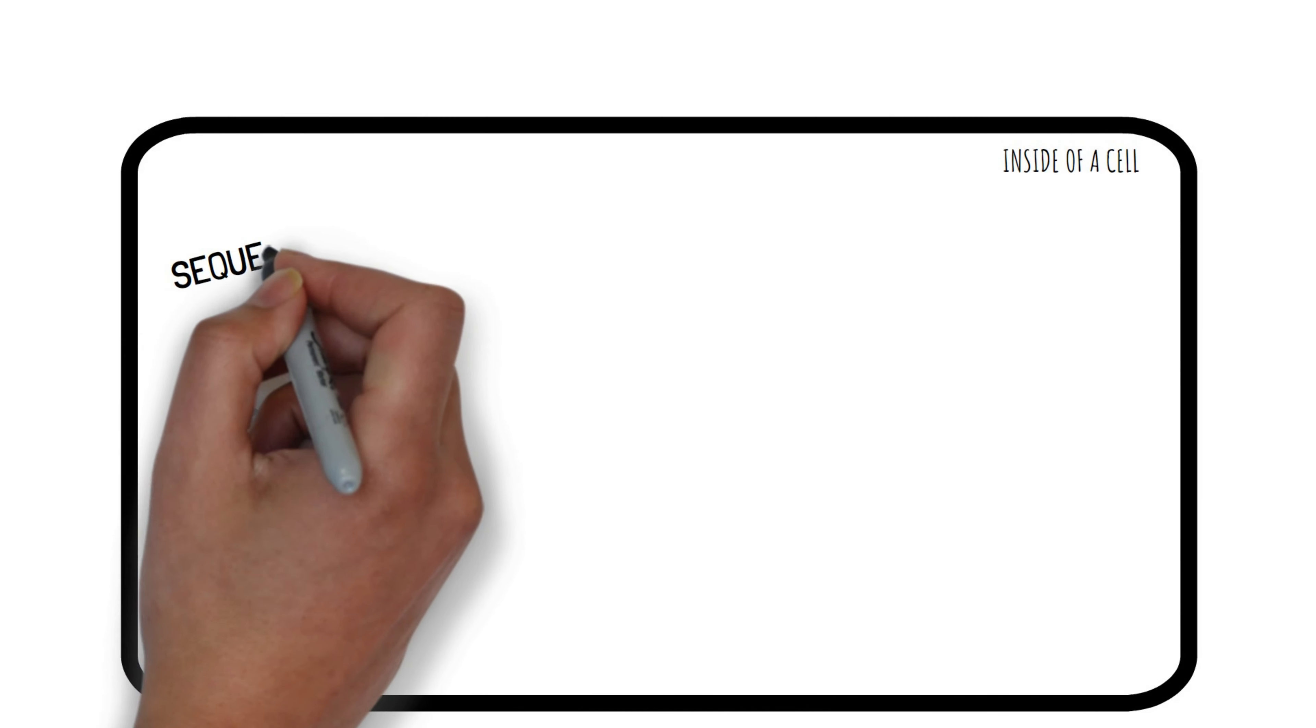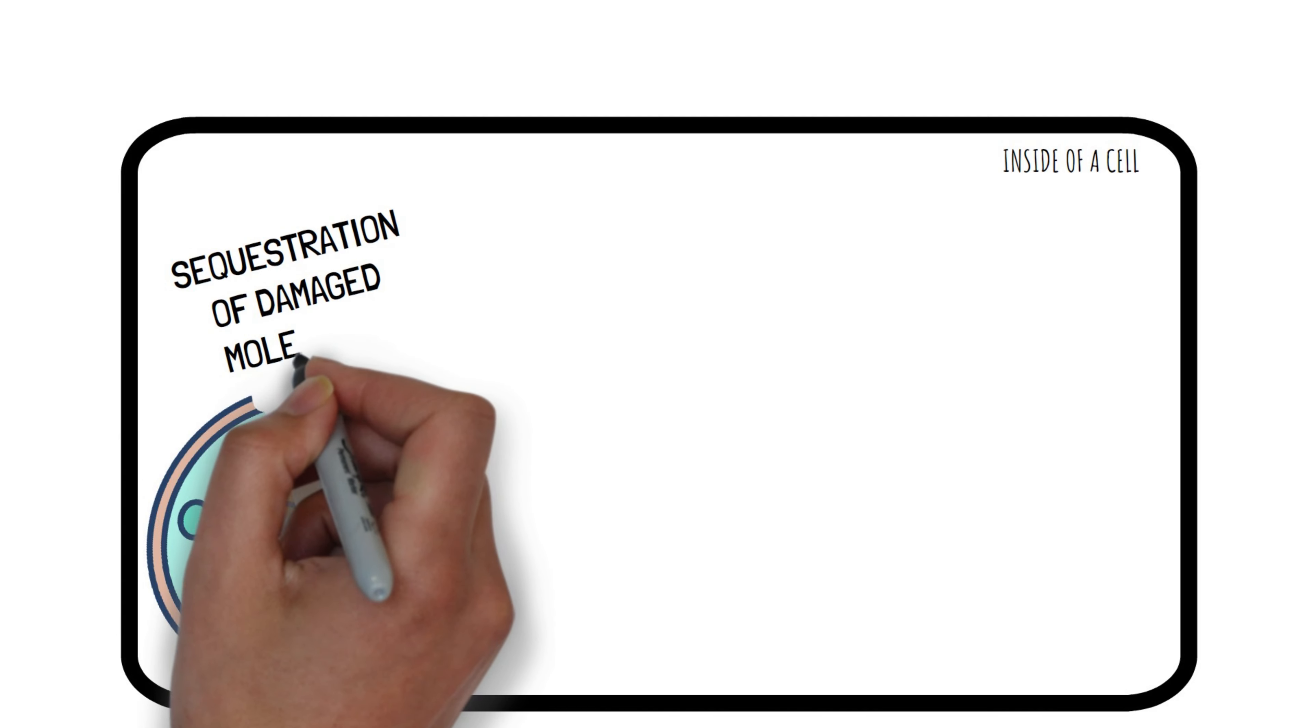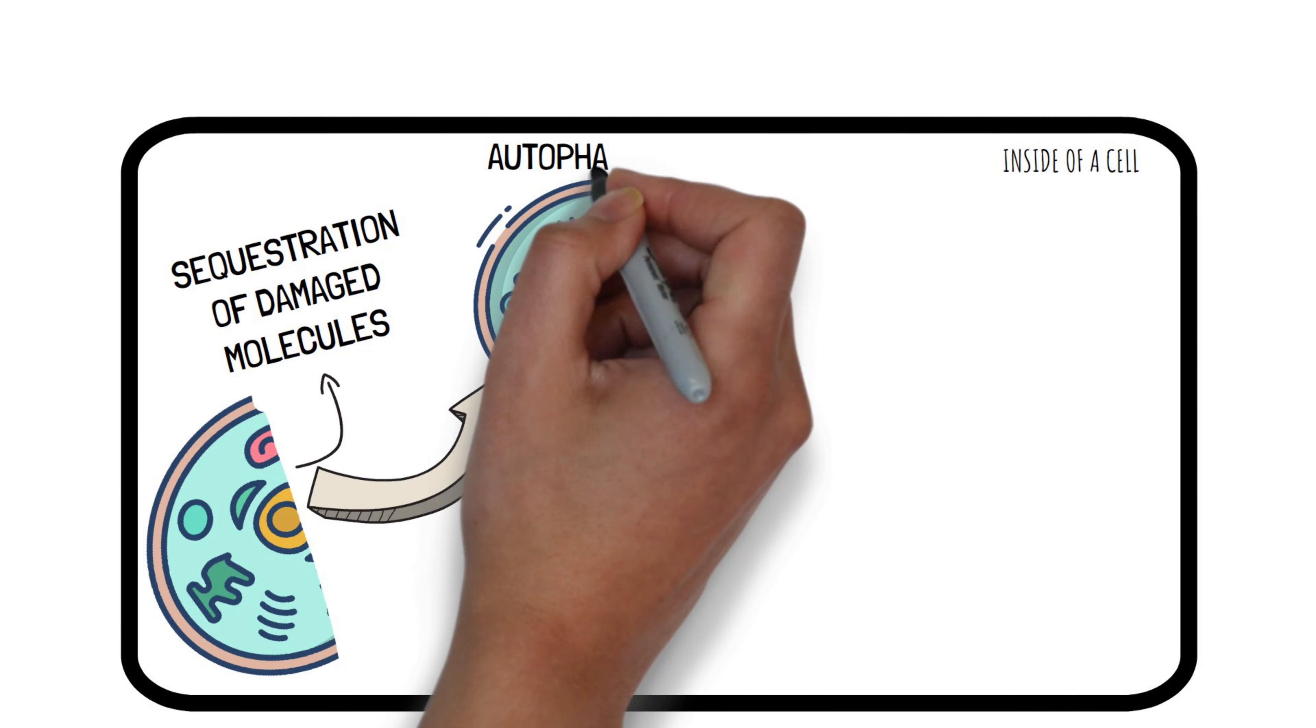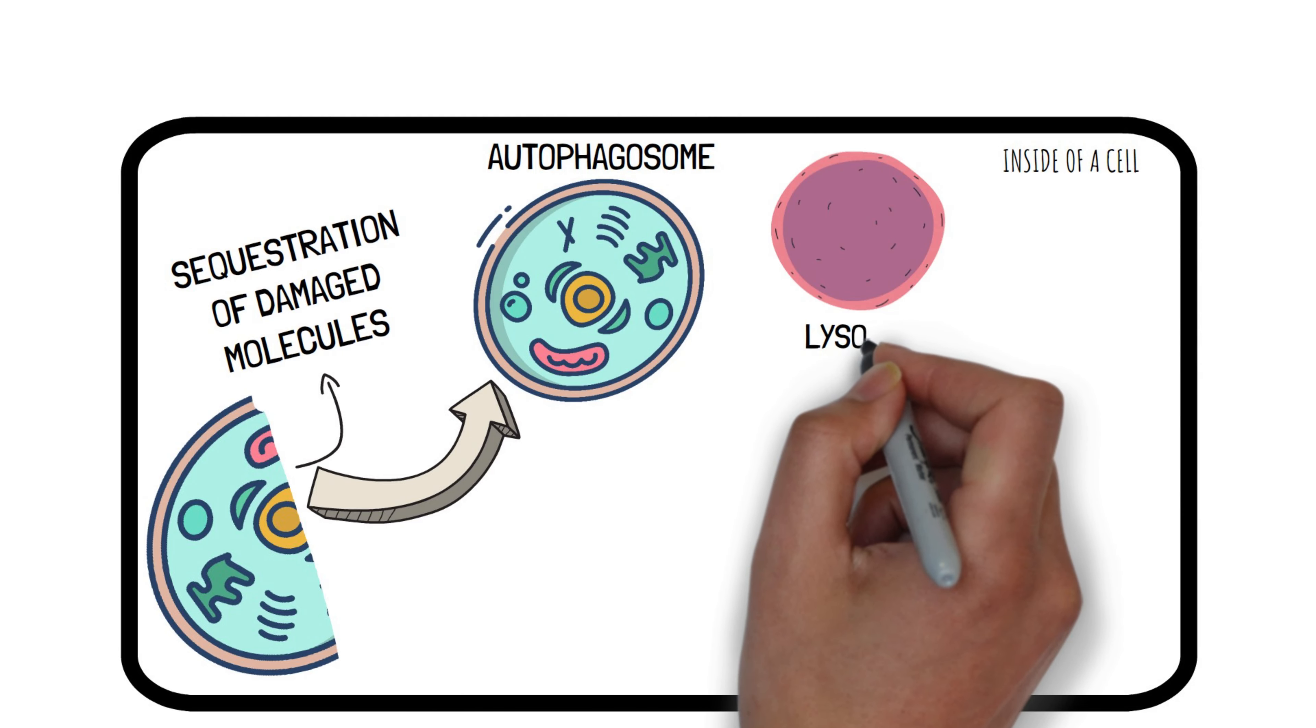In 24 hours, your cells start cleaning up old parts and breaking down misfolded proteins linked to diseases like Alzheimer's. This cleanup process is called autophagy.